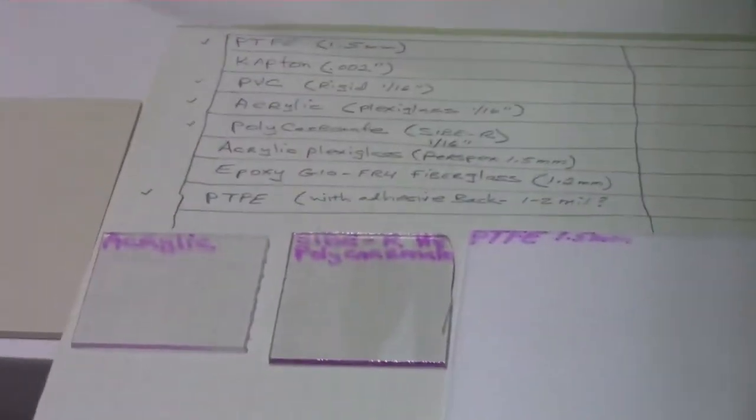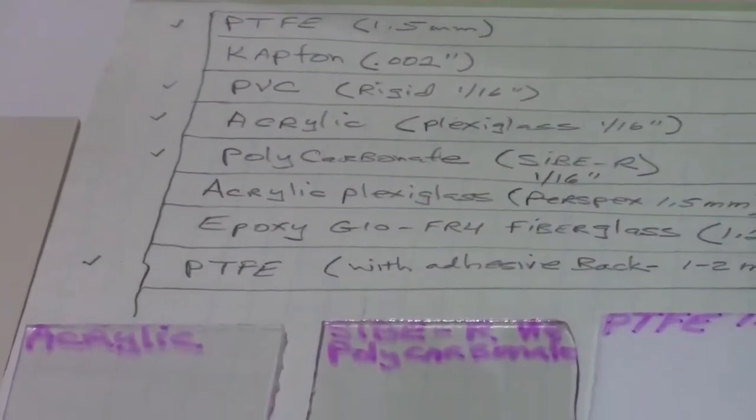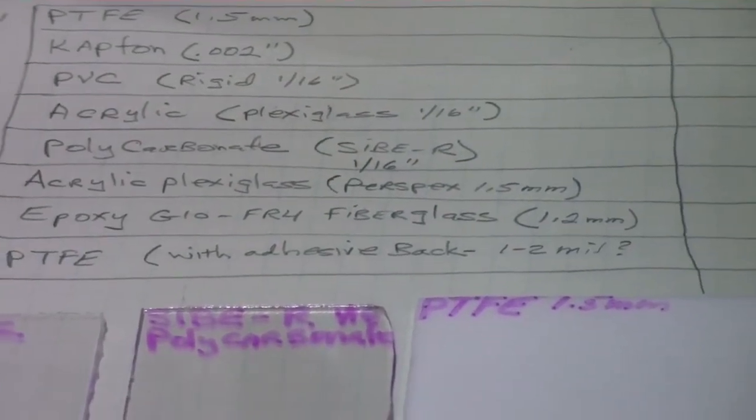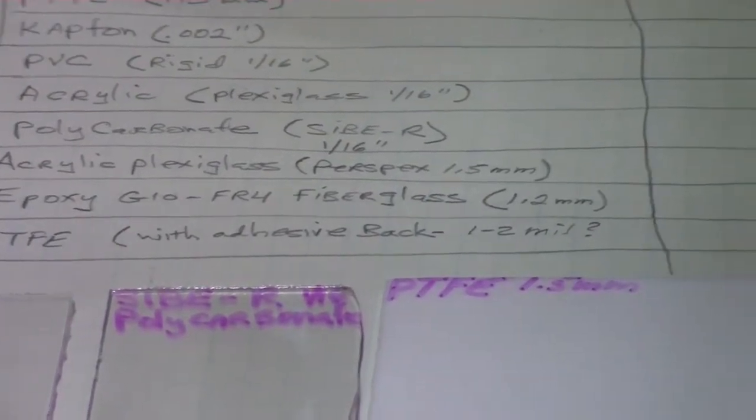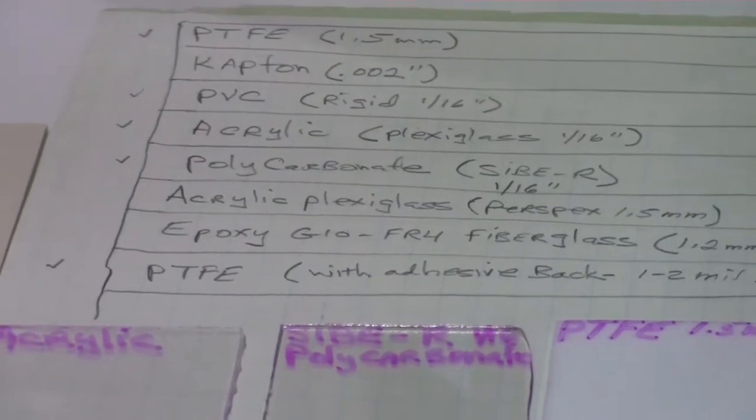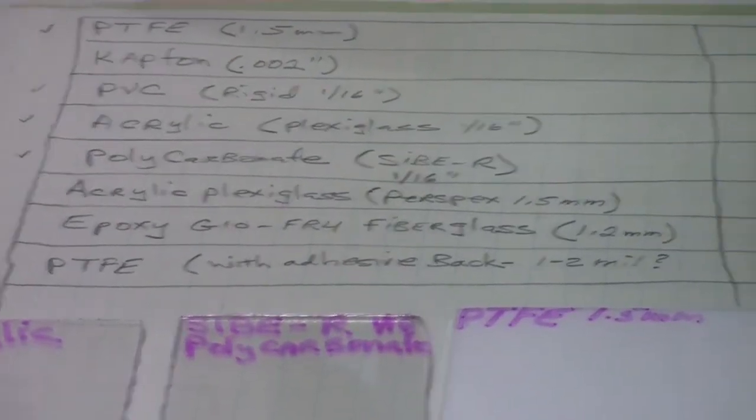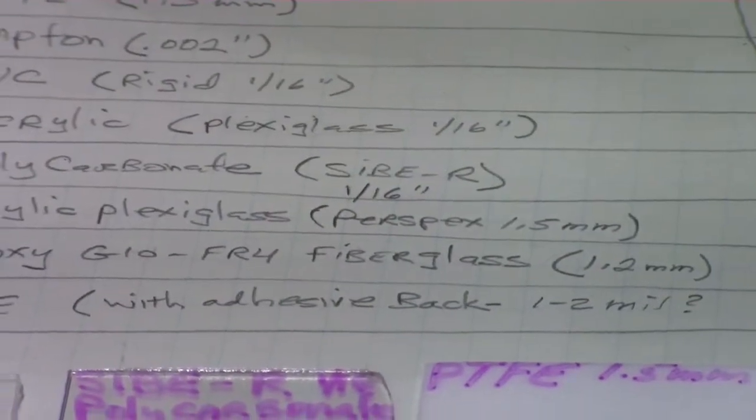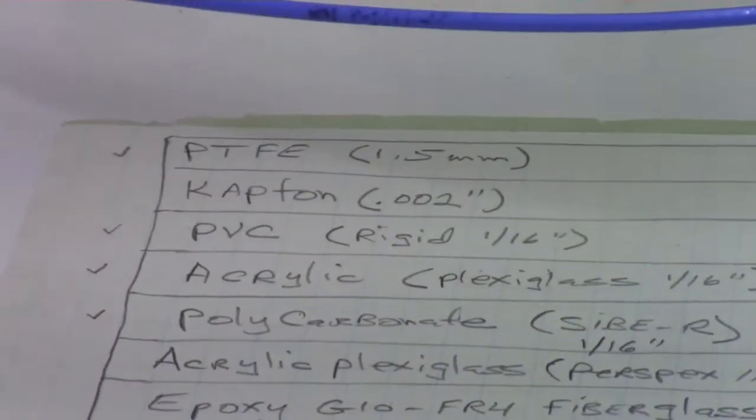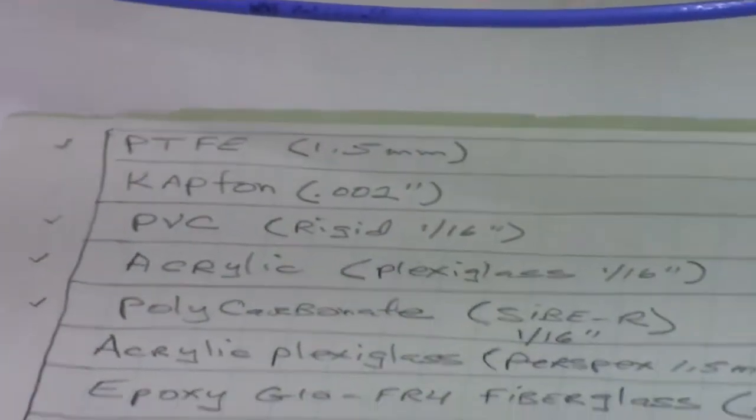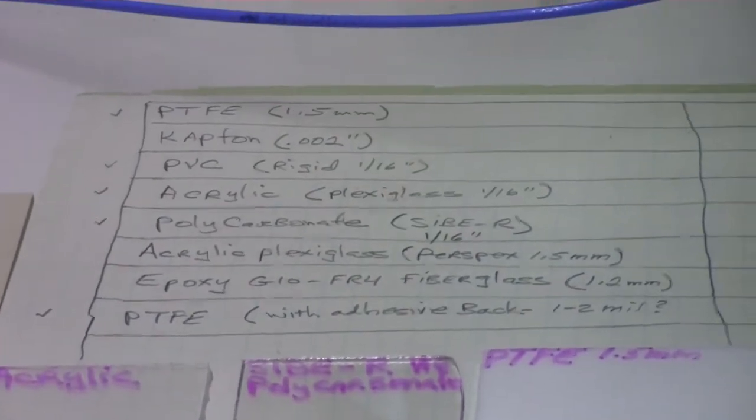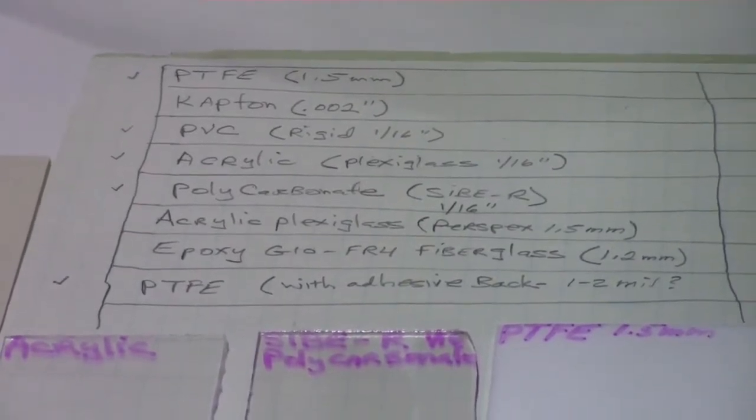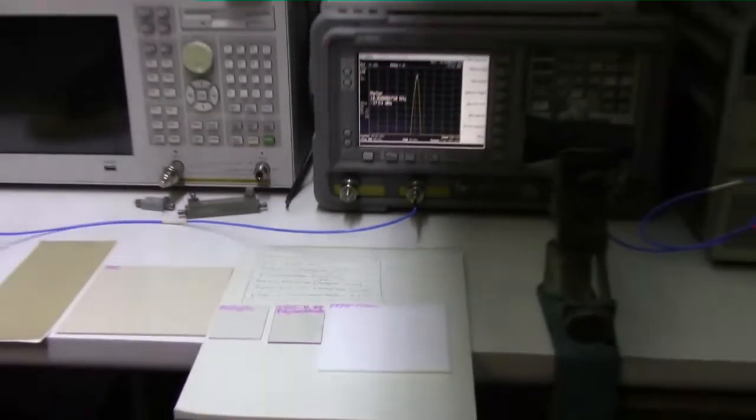Within the next day or so as more samples arrive, we'll test some epoxy, some common G10 FR4 type fiberglass, basically printed circuit board without the copper, it'll be 1.2 millimeters thick. We also have some more acrylic plexiglass, this time it'll be 1.5 millimeter thickness, so it'll be a thinner sample. And then we've got some Kapton on the way which I'm very interested in seeing how it performs. So these are the plastics that I've selected for evaluation because they should be fairly resilient to ultraviolet.